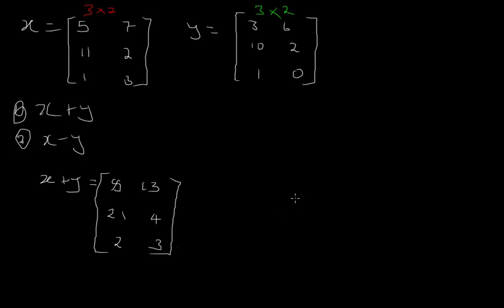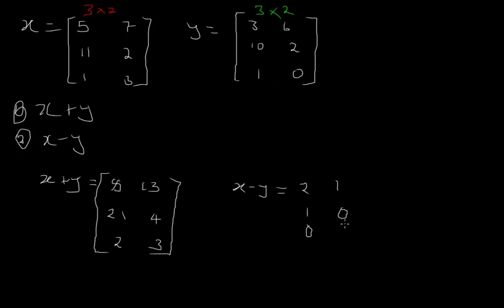For X minus Y, we follow the same procedure as addition except we subtract. So 5 minus 3 gives 2, 7 minus 6 gives 1, 11 minus 10 gives 1, 2 minus 2 gives 0, 1 minus 1 gives 0, and 3 minus 0 gives 3. This is what we get when we subtract matrix Y from matrix X.